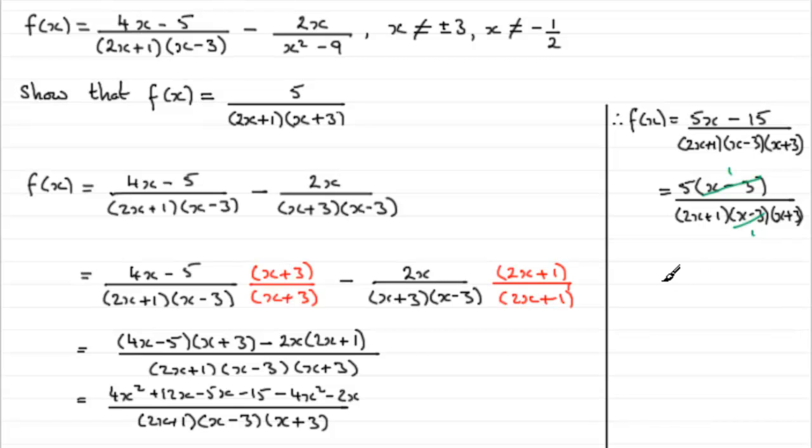So what we have now is the simplified version. And it is basically 5 all over 2x plus 1 multiplied by x plus 3. And that's what we had to show.